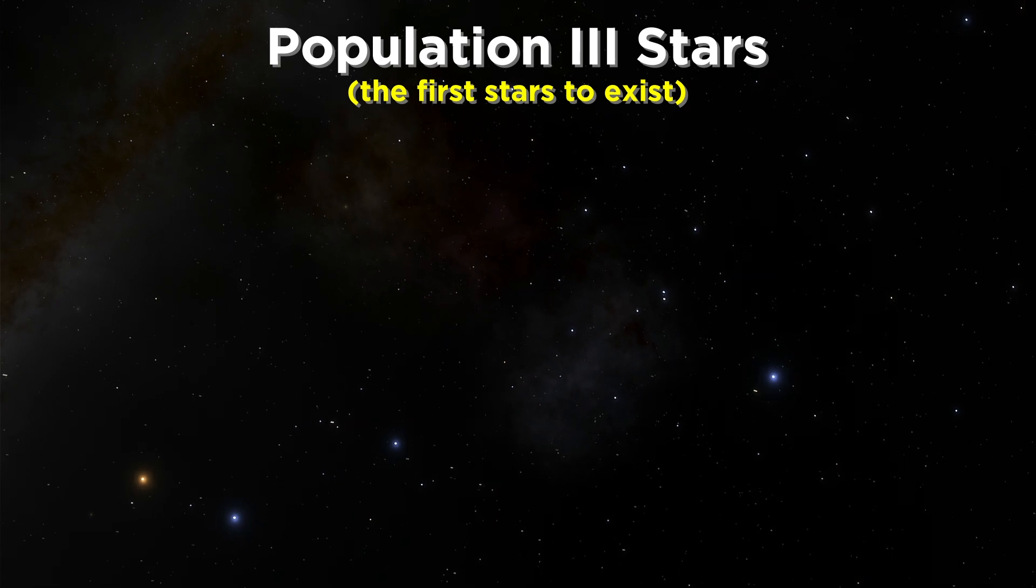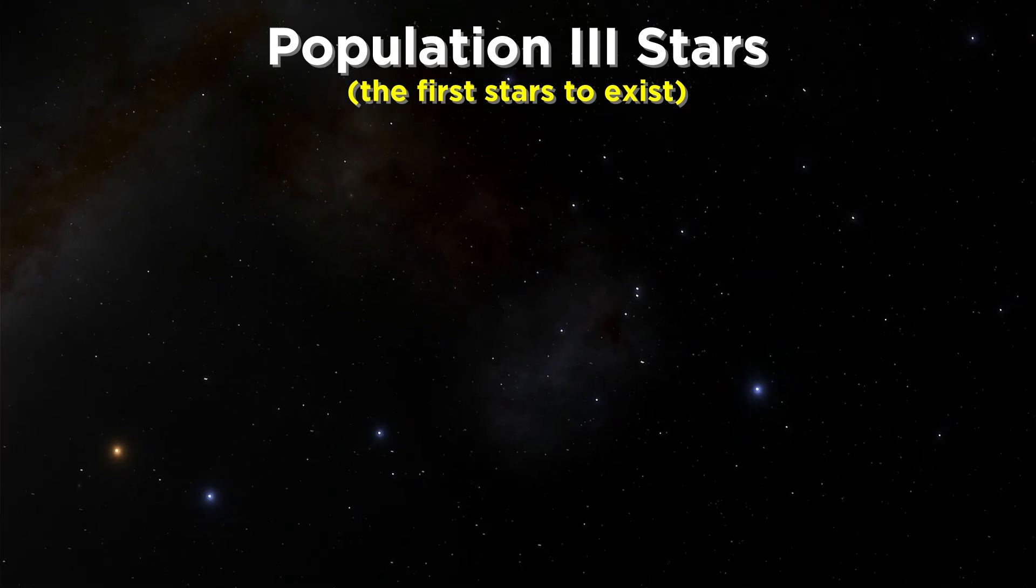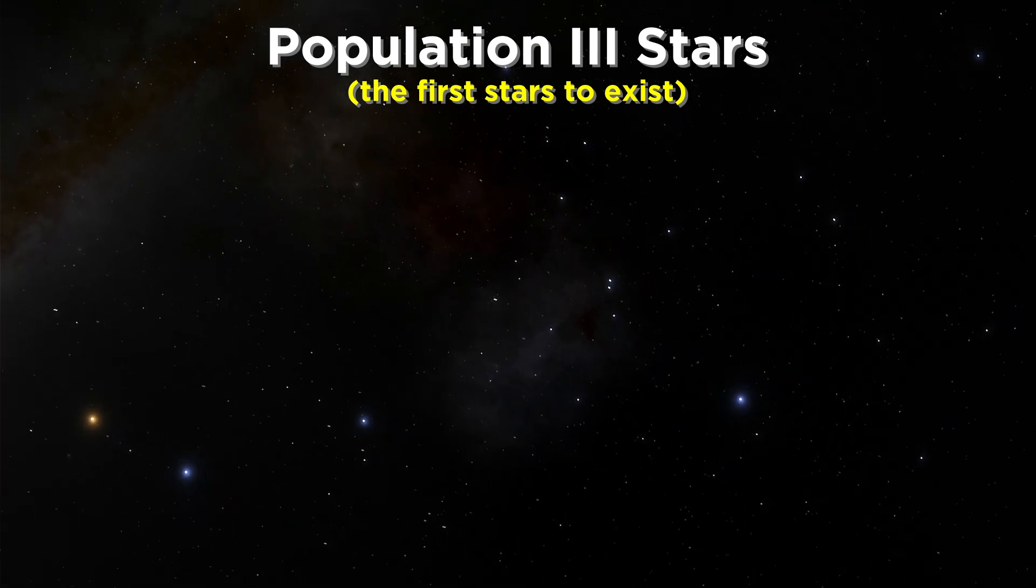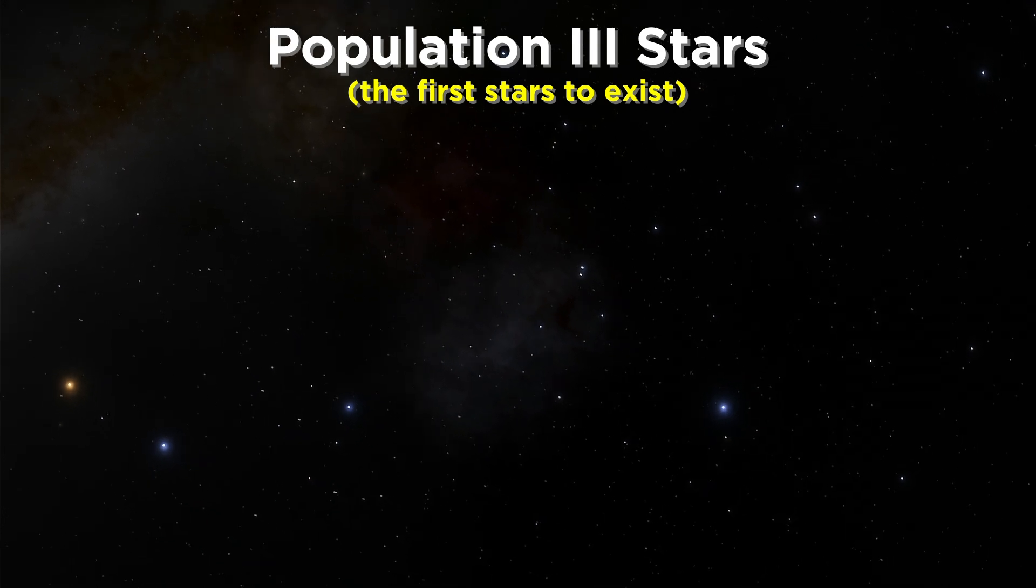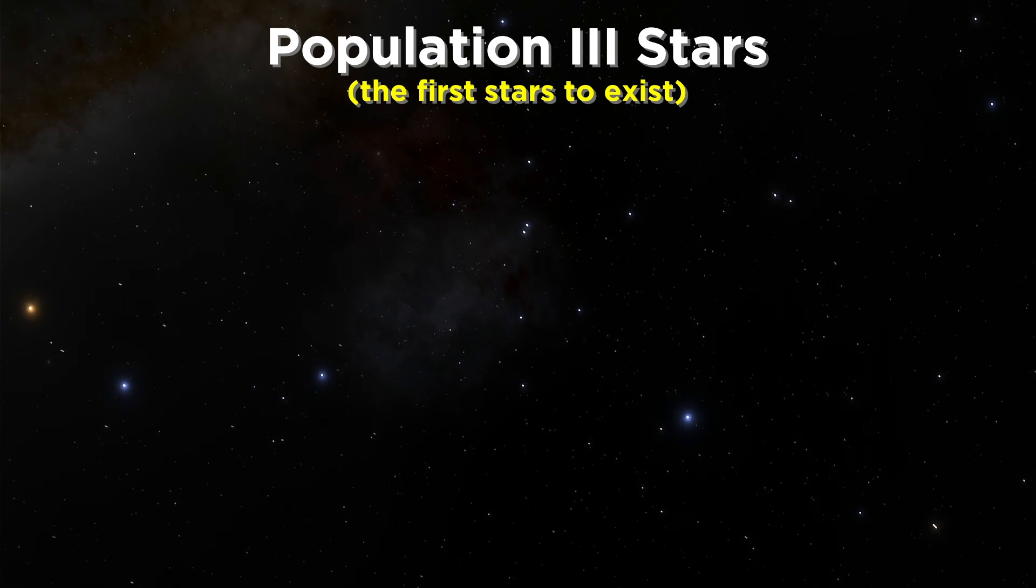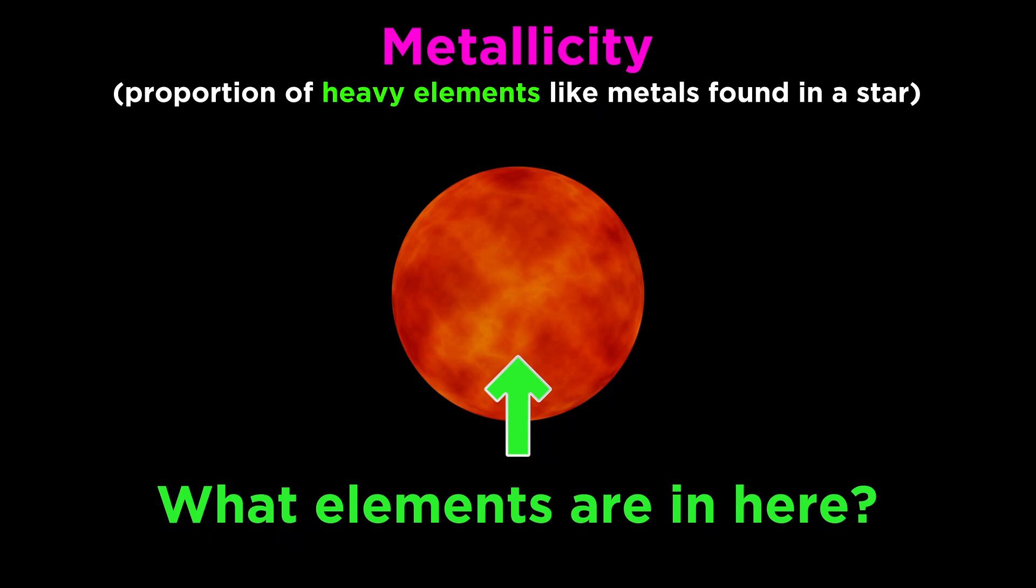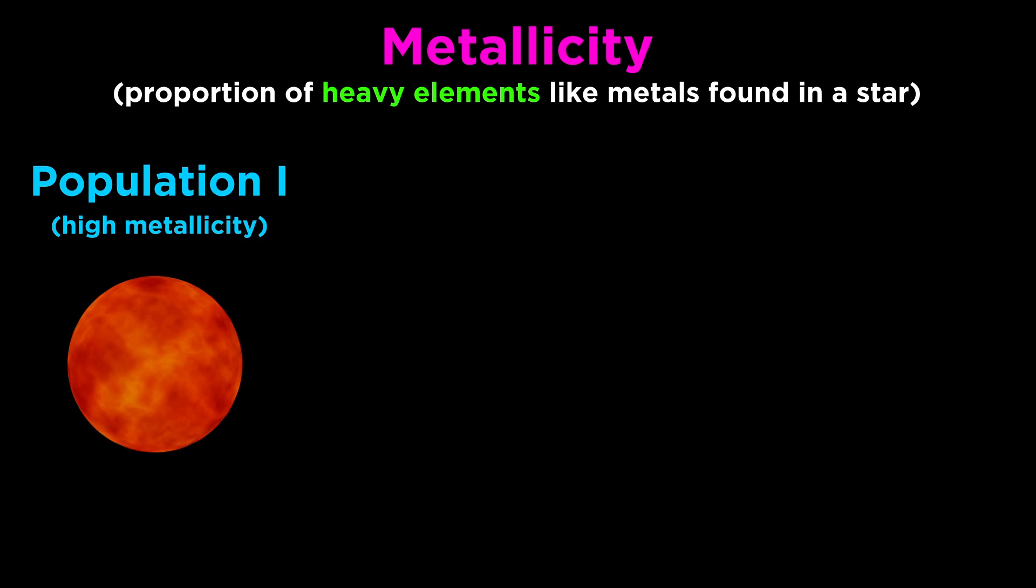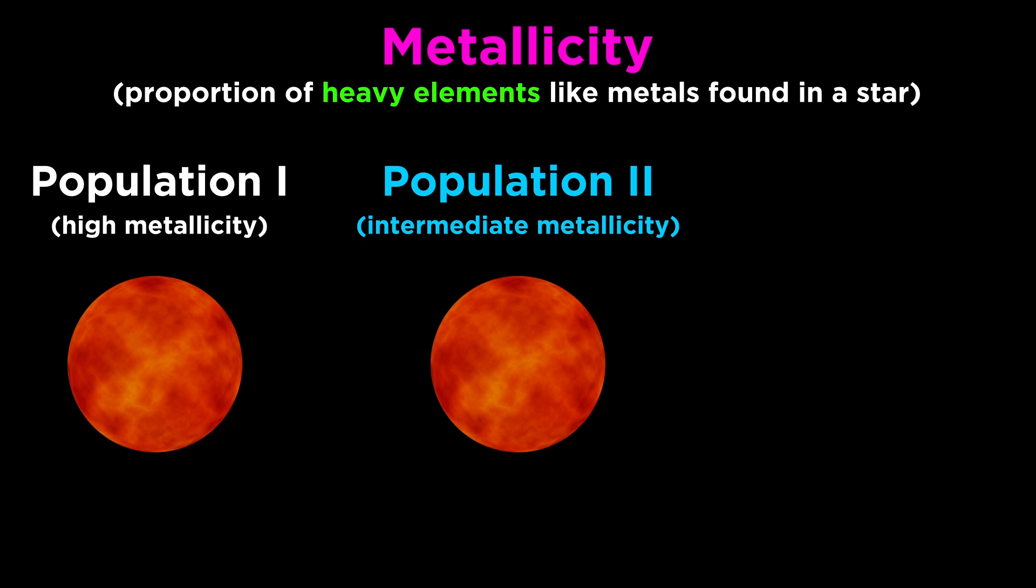First, to get some jargon out of the way, we call these Population III stars. This may seem confusing as they were the first stars around, but this is another relic of early categorization methods. Astronomers were assessing the metallicity of stars, which means the proportion of heavy elements contained in the star. Those with very high metallicity were deemed Population I, intermediate metallicity was Population II, and low metallicity was Population III.